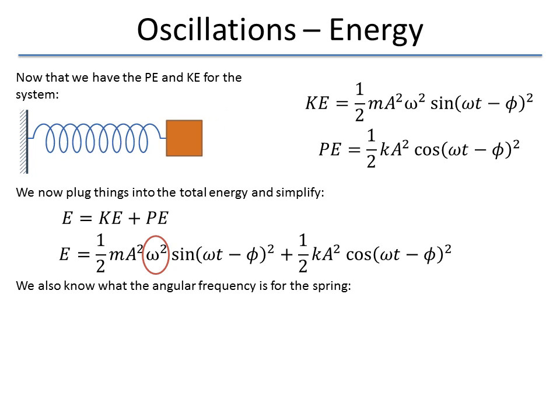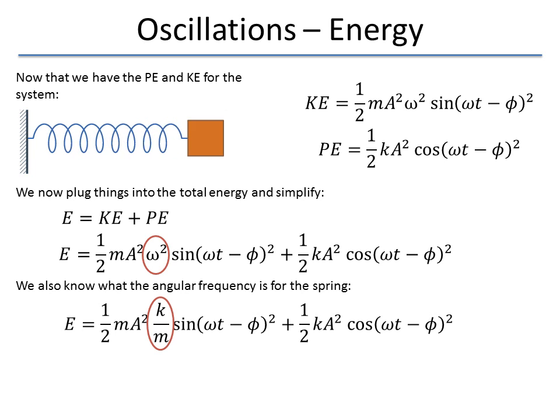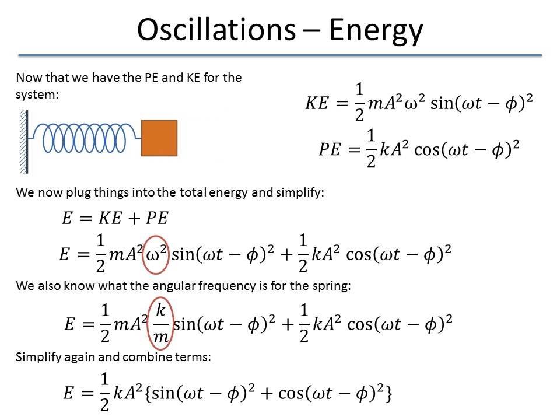We notice that the angular frequency, this omega squared term, we already figured this out for a spring. We know what it is. We can see that for a spring it's equal to k over m. This is omega squared is equal to k over m. Something we've already seen before. So, let's simplify things. I'm going to bring out a factor. This k, this m and m will cancel. I have a factor of k A squared over here with a one half. I have a factor of k A squared with a one half. So I bring that in front.